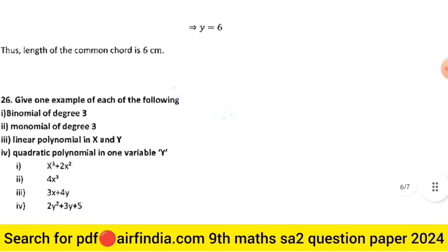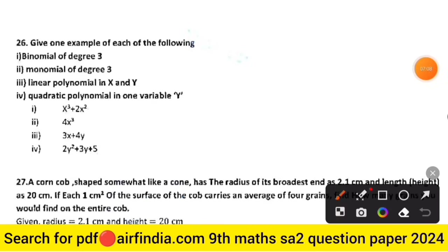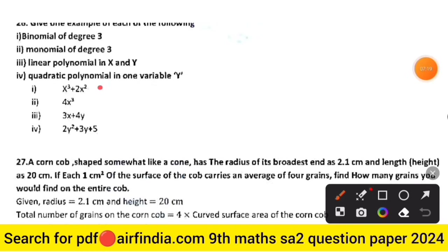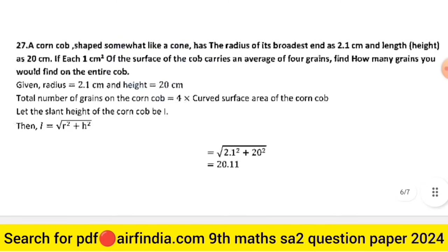Question 26: give one example of each — binomial of degree 3: x³ + 4; monomial of degree 3: 4x³; linear polynomial in x and y: 3x + 4y; quadratic polynomial in one variable y: 2y² + 3y + 5. These are the right answers for all four parts.